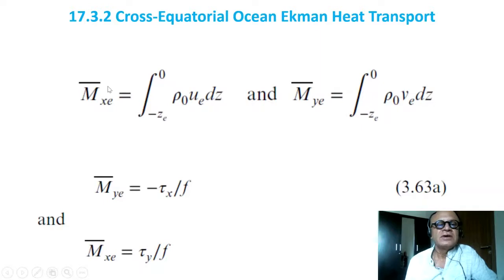The Ekman transport we defined before is the integral from some depth in the ocean to the surface of the Ekman currents. Currents are individual parcels and transport is the volume moving, right?